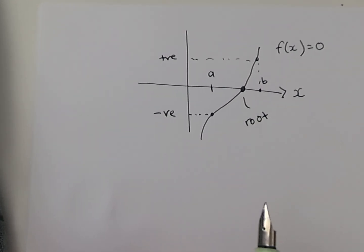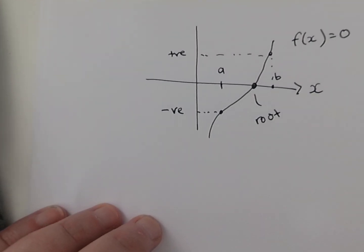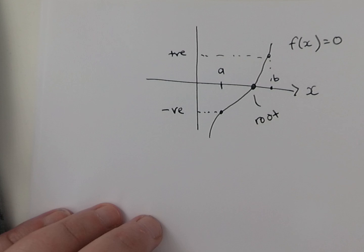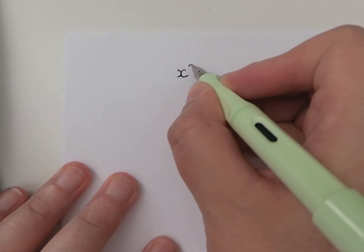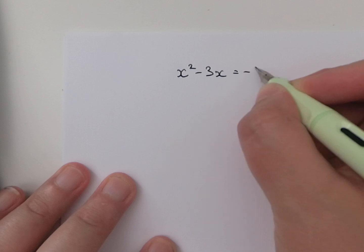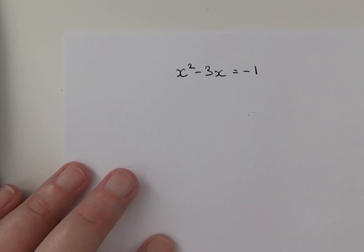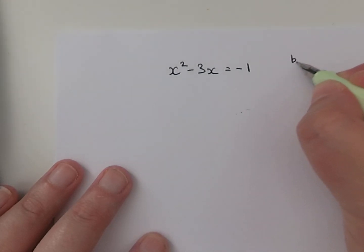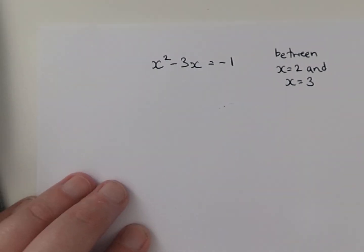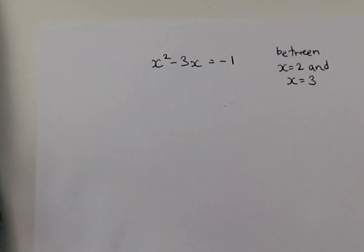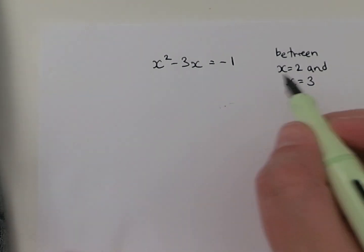At GCSE, what do we do to use the change of sign rule? Well, let me give you an example. My question is to show that there is a solution to this function between x is 2 and x is 3.